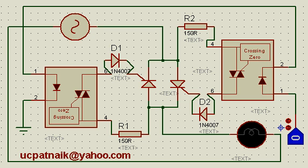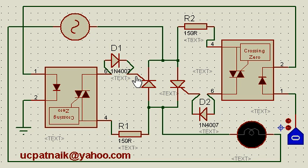Let's see how we connect silicon control rectifiers in anti-parallel, that is back-to-back, to control AC power. The AC supply is here and the anti-parallel switch is here — we call it a control switch. This is connected to a lamp in series with this switch. We have taken two opto-isolators, one for each silicon control rectifier, connected in this particular fashion.